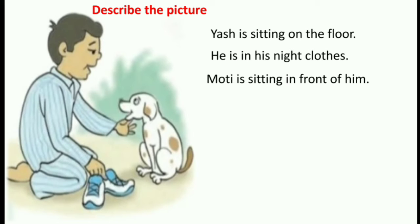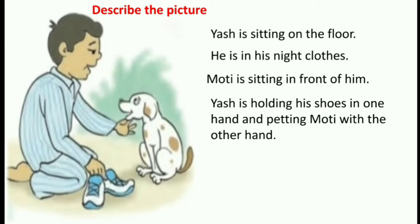Moti is sitting in front of him. We also know that Moti is Yash's pet dog and he is sitting in front of him. Yash is holding his shoes in one hand and petting Moti with the other hand. So you can see one hand has his shoes — he is holding them — and the other hand is petting Moti, meaning just putting his hand over Moti's body.